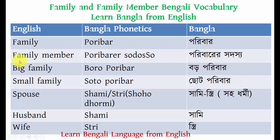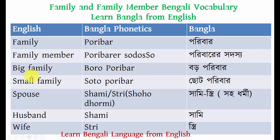The next one is 'family member.' Family member in Bengali means 'poribarer sodasho' — 'poribar' means family, 'sodasho' means member. Next is 'big family.' Big means 'boro,' so big family means 'boro poribar.'